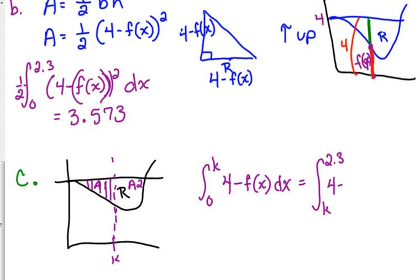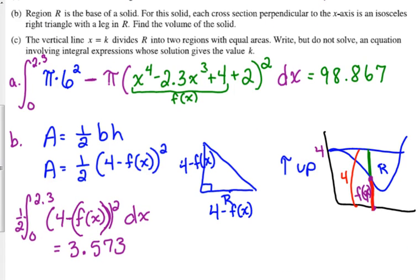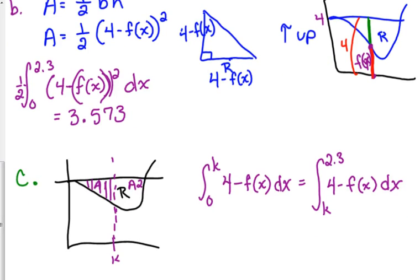So, that's equal to the integral from k to 2.3 of the same integrand, the top function is still 4, the bottom function is f of x, dx. You get one point for the area of one region, so I guess if you just did half of it, and one point for the equation as a whole. I don't really know how they would determine that. But, two points for that one. You don't have to integrate, you don't have to solve it. It just says, write, but do not solve. That's it. Two points.